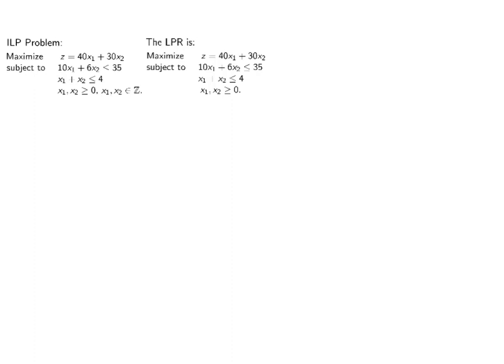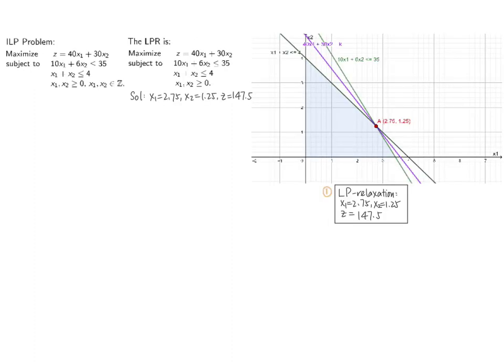Now let us illustrate the branch and bound method with the same example. First, we shall solve the LP relaxation. The LP relaxation is to maximize z equals 40x1 plus 30x2, subject to 10x1 plus 6x2 less than or equal to 35, x1 plus x2 less than or equal to 4, both x1 and x2 non-negative — removing the integer constraints. We can use any method from previous chapters.